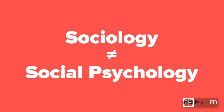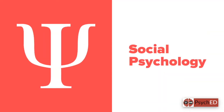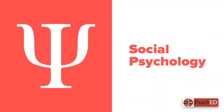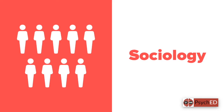It is worth noting that sociology and social psychology are not the same. Social psychology is interested in how the group affects the individual and vice versa, whereas sociology is interested in how the group behaves and how the groups interact with each other and society.